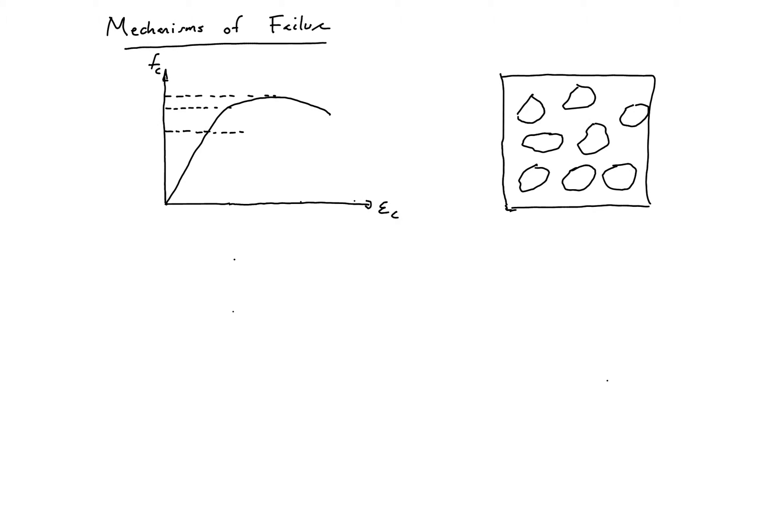In this short video, we're going to look at the mechanisms of failure. There are four main steps that occur as concrete progresses to failure. We're going to look at them with the aid of the stress-strain diagram shown on the left and the cross-sectional cut of concrete shown on the right, where we have our aggregate and paste.